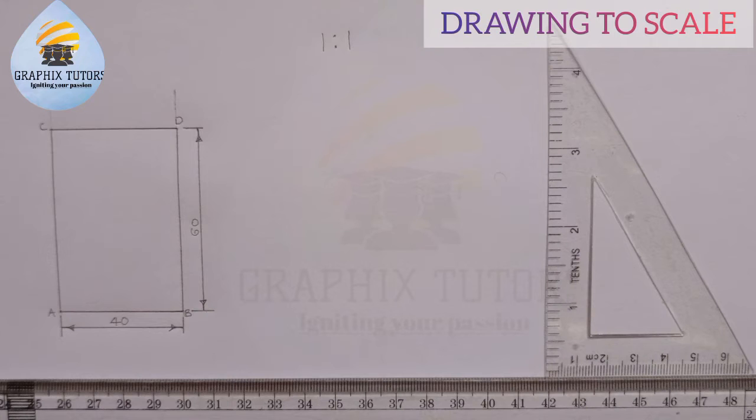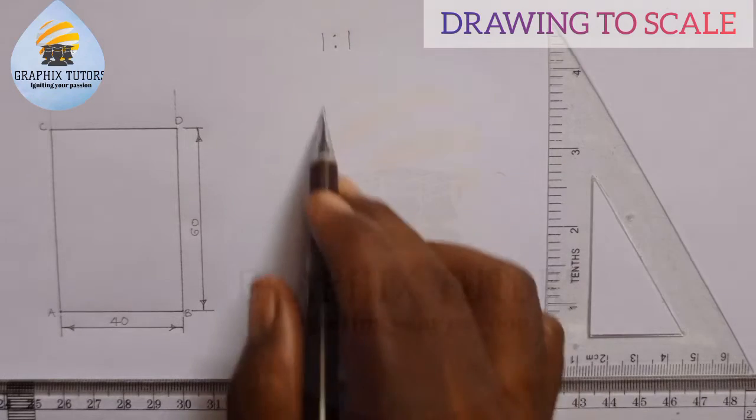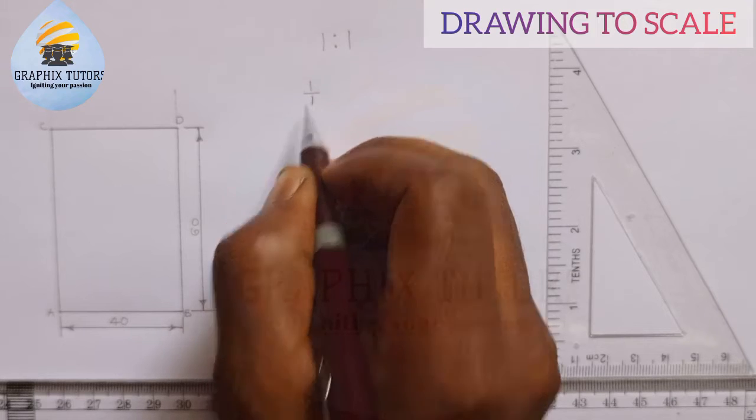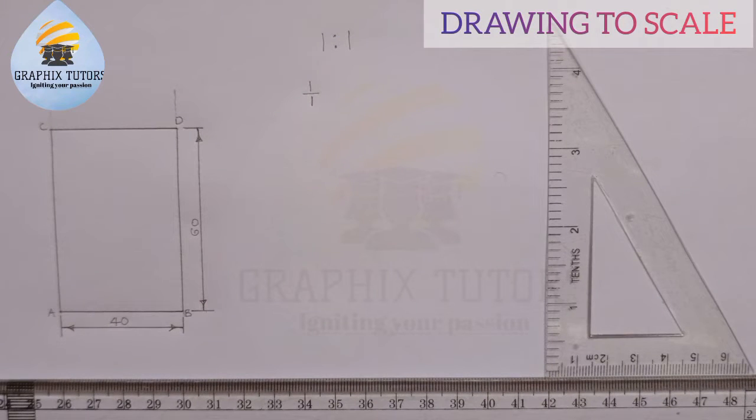We are told to draw using scale one ratio one. What does it mean to draw in a ratio of one is to one? Now let me take you down memory lane.